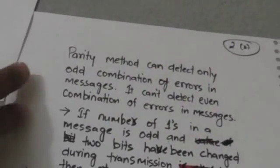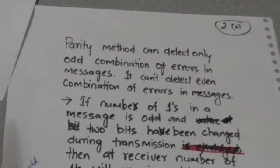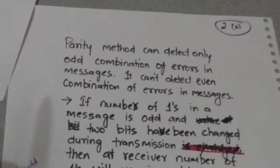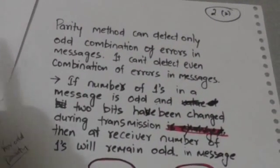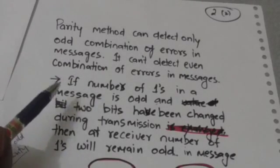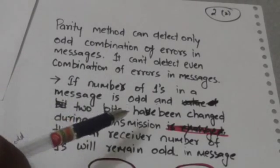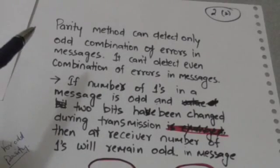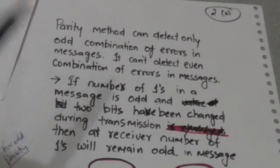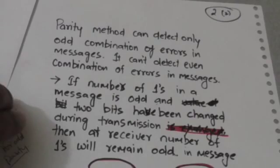The parity method can detect only an odd combination of errors in messages; it cannot detect an even combination of errors. For example, if the number of ones in the message including the parity bit is odd and two bits have been changed during transmission, then at the receiver the number of ones will remain odd, so this error would not be detected.